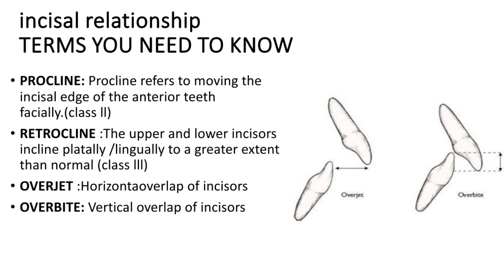The next term is overjet, which is the horizontal overlap of incisors — the horizontal overlap of the upper and lower incisors, as you can see in the given picture. Overbite is the vertical overlap of incisors, and you can see this vertical overlap between the upper and lower incisors in the picture provided.